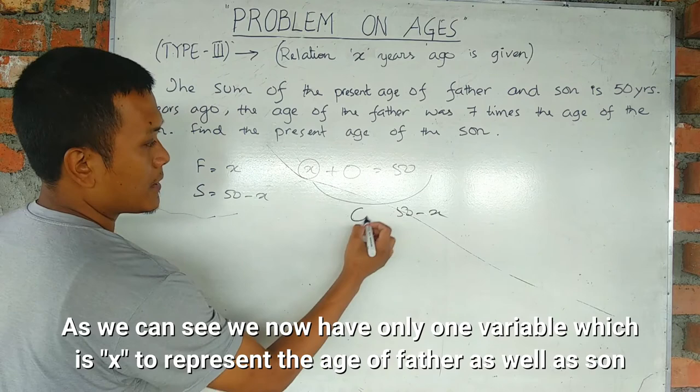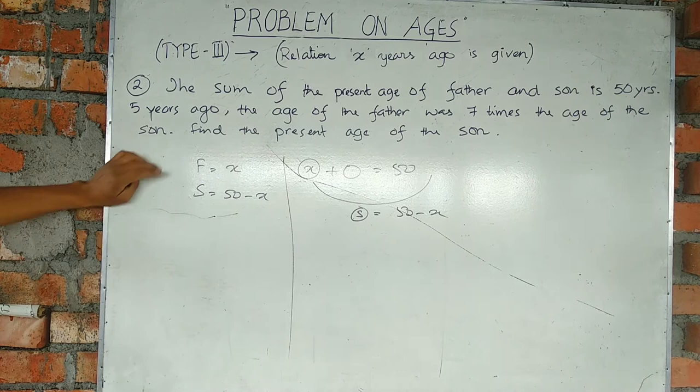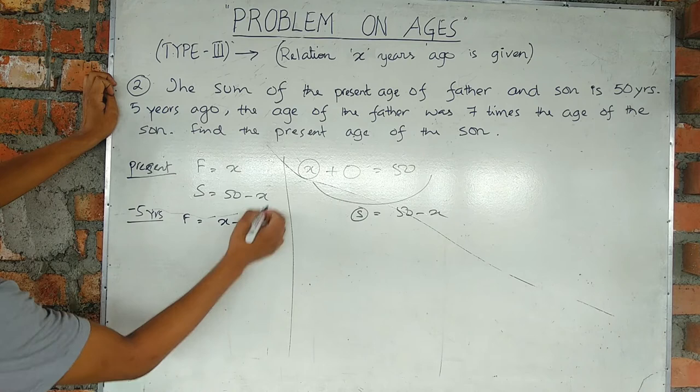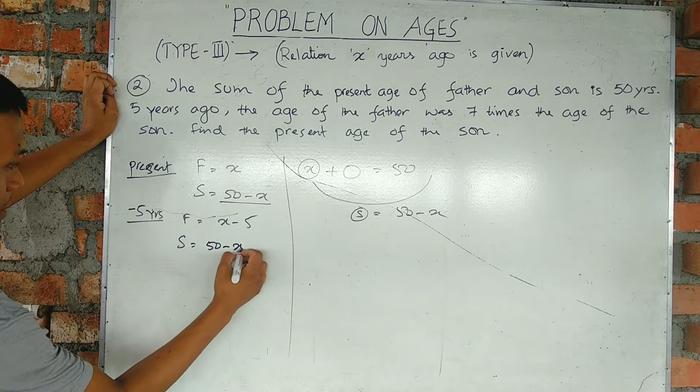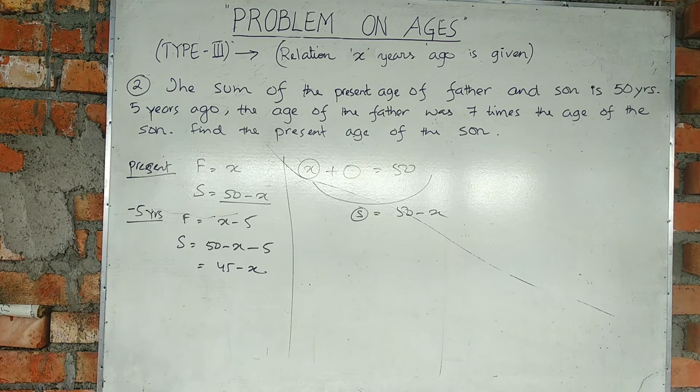5 years ago, father was x minus 5, and son was 50 minus x minus 5, which is 45 minus x. The father was 7 times this value. So equation 2 is x minus 5 equals 7 times 45 minus x.